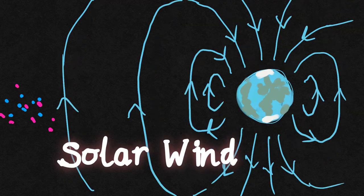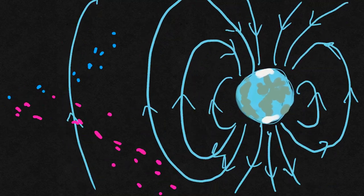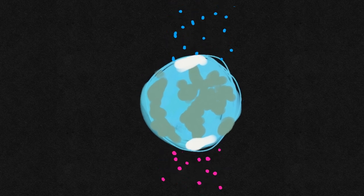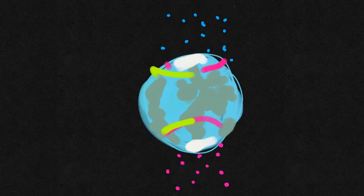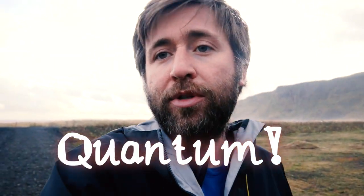The solar wind is a stream of charged particles that comes from the Sun. They interact by Fleming's left-hand rule with the Earth's magnetic field. They are therefore deflected up to the north pole and down to the south pole, and when they meet Earth's atmosphere in the upper atmosphere, they ionize particles in the upper atmosphere.